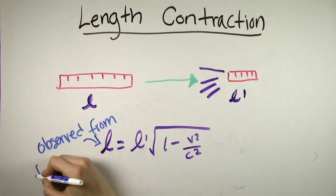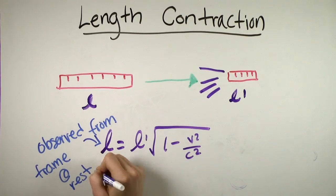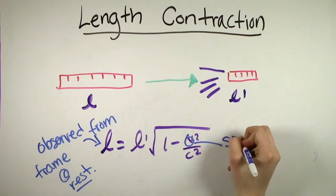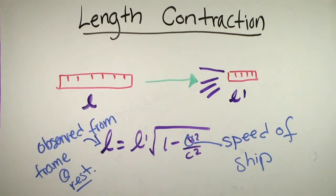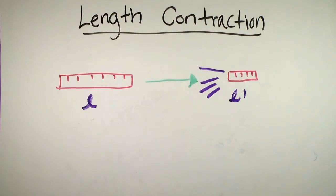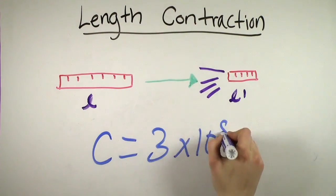It's important to note that this isn't just some optical illusion. The object's length is actually different in different reference frames. The reason why this occurs is rather complicated, but at its core it is due to the fact that C, the speed of light, is constant in all reference frames.